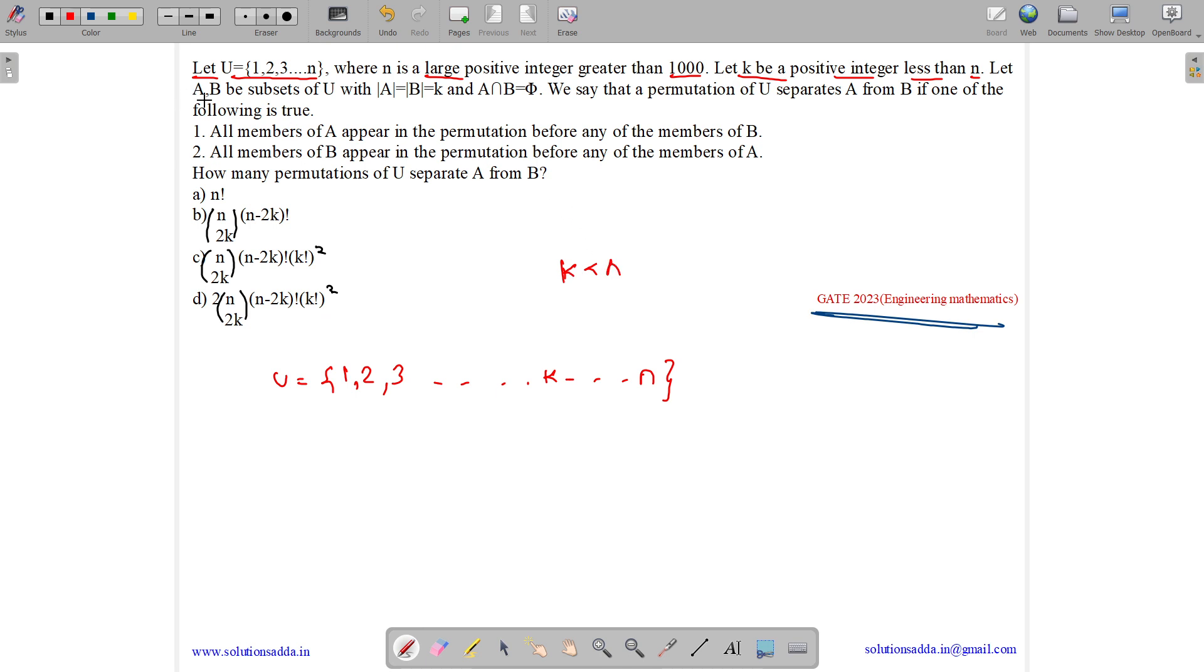Now, let A and B be subsets of U with cardinality of A and cardinality of B equals to k. So cardinality of A equals to k, cardinality of B equals to k. If both had cardinality equals to k and A intersection B equals to phi, we have A as a subset of U and B being a subset of U.